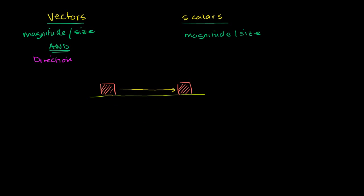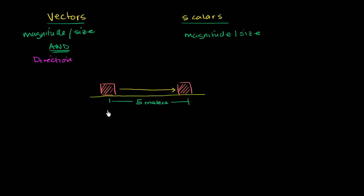I take a ruler out and say I've moved the brick five meters. So my question to you is: is my measurement of five meters a vector or a scalar? Well, if I just tell you five meters, you just know the size of the movement — the magnitude of the movement. So if someone were to just say five meters, this is a scalar quantity.